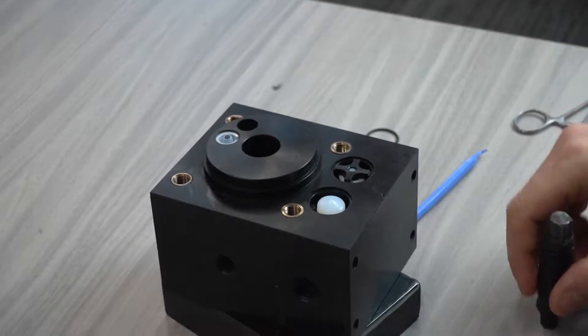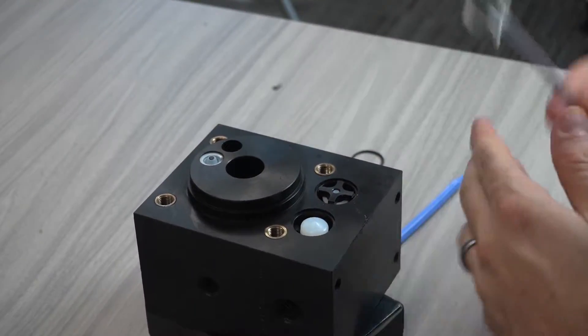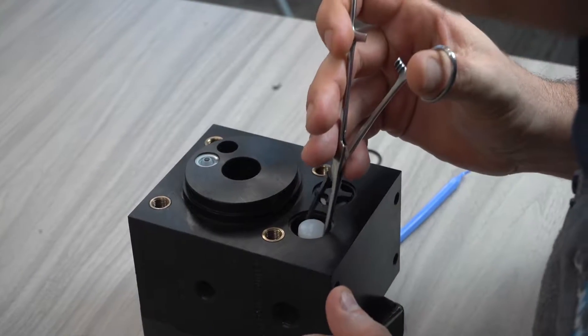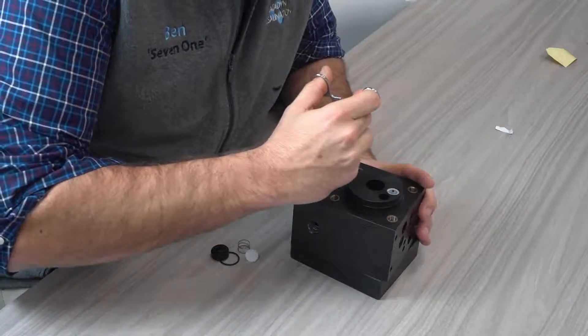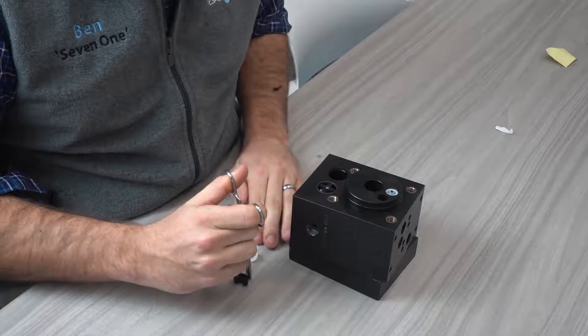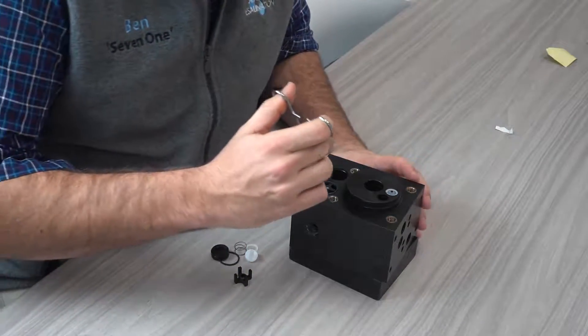I'm just going to pull out the check valve seat, and then I'll pull out the parts of the check valve, and then I'll do it on the other side.